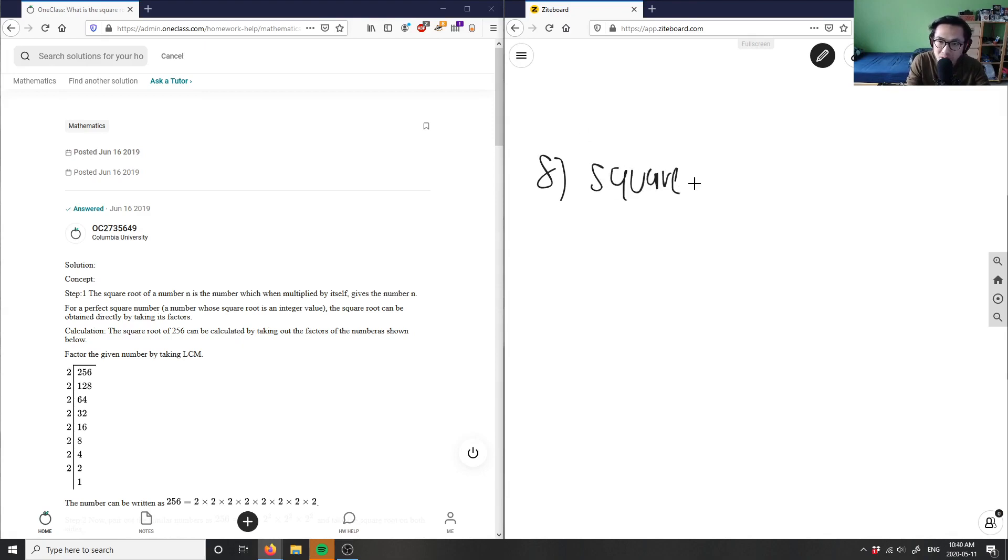Square root of 256. We can either use long division as given here, or we can use simplified radical form. In this case, I'm going to use simplified radical form. So for 256, I can take the prime factors out. The first prime factor I would take out here would be 2.